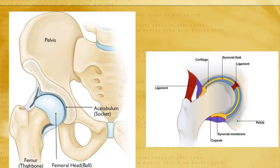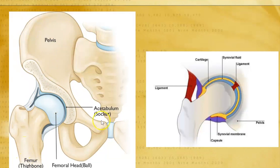First of all, let us understand the structure of the hip joint. It is a ball and socket joint. The socket is the acetabulum bone, which is a part of the pelvic bone, and the ball is a part of the femur or the thigh bone. The joint from inside is lined by a membrane called the synovial membrane, and the bones are lined by a thin smooth cartilage which helps in easy movement at the joint.